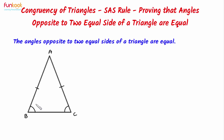There is an easy method of recognizing the side opposite to the given angle. The side opposite to the angle of a triangle is the side which is not an arm of the angle under consideration. So, if we take angle B, then AC is not the arm of angle B, so AC is the opposite side to angle B. Similarly, if we consider angle C, AB is the side which is not an arm of angle C, so AB is the opposite side to angle C.